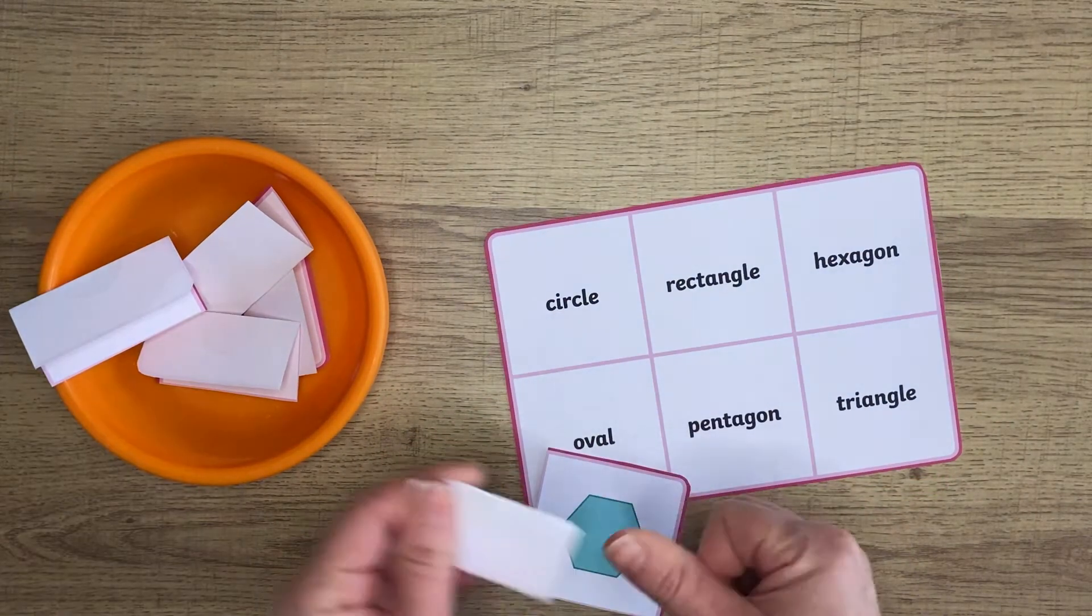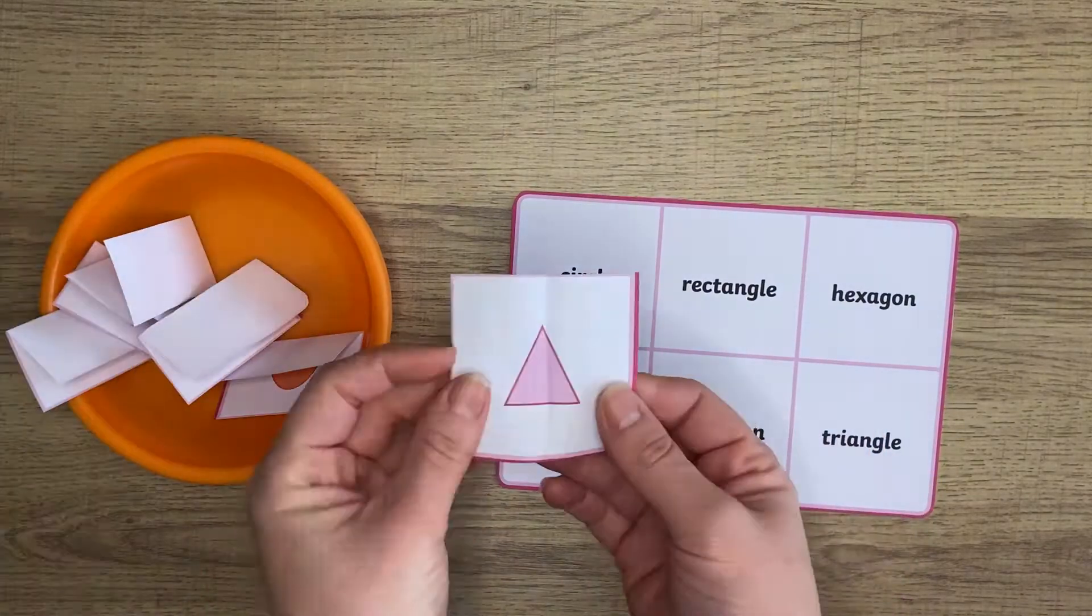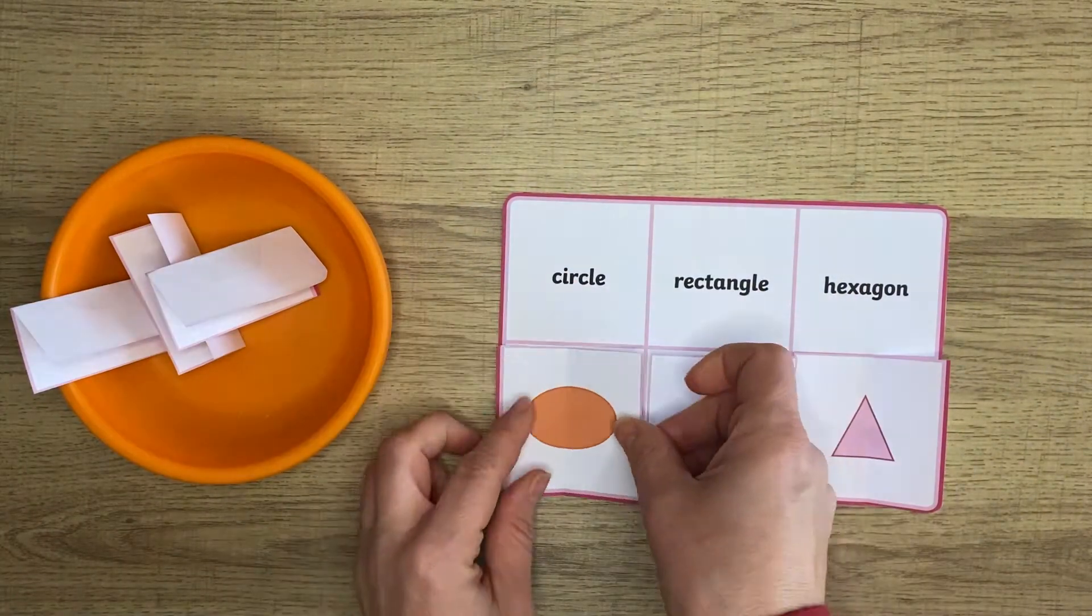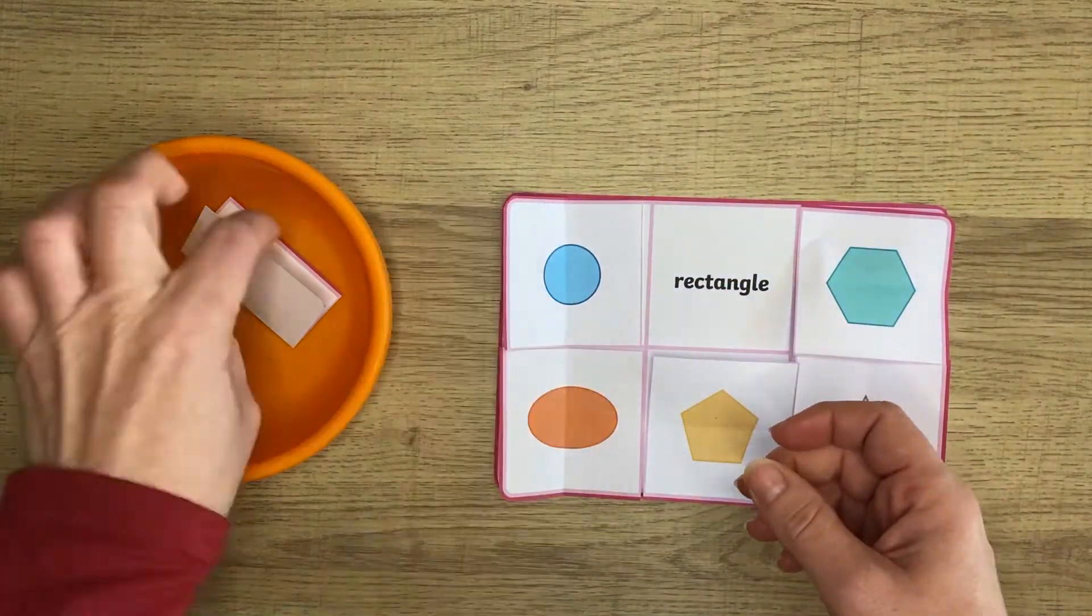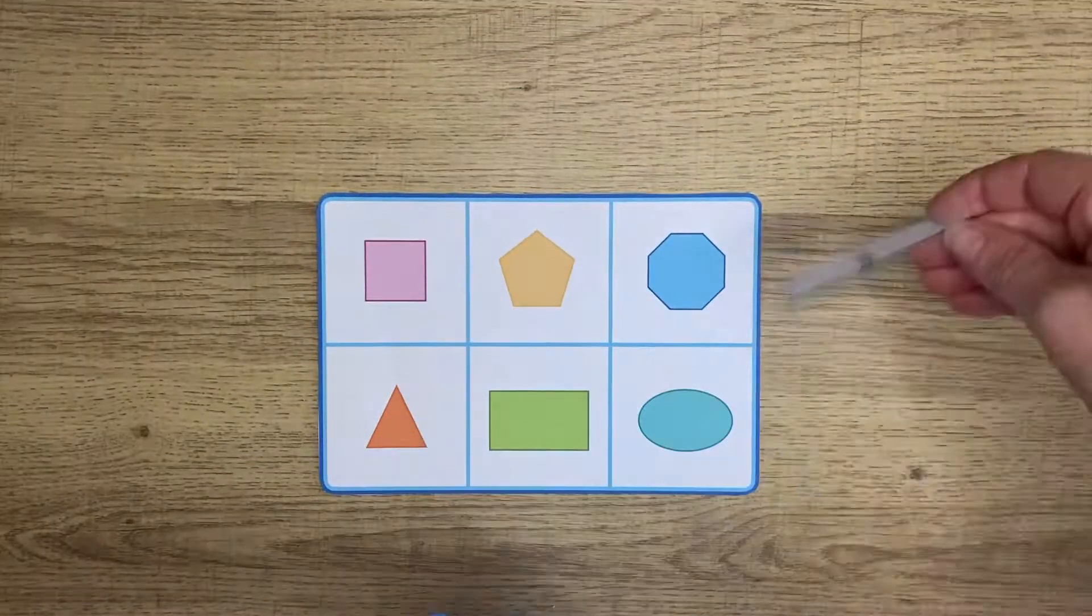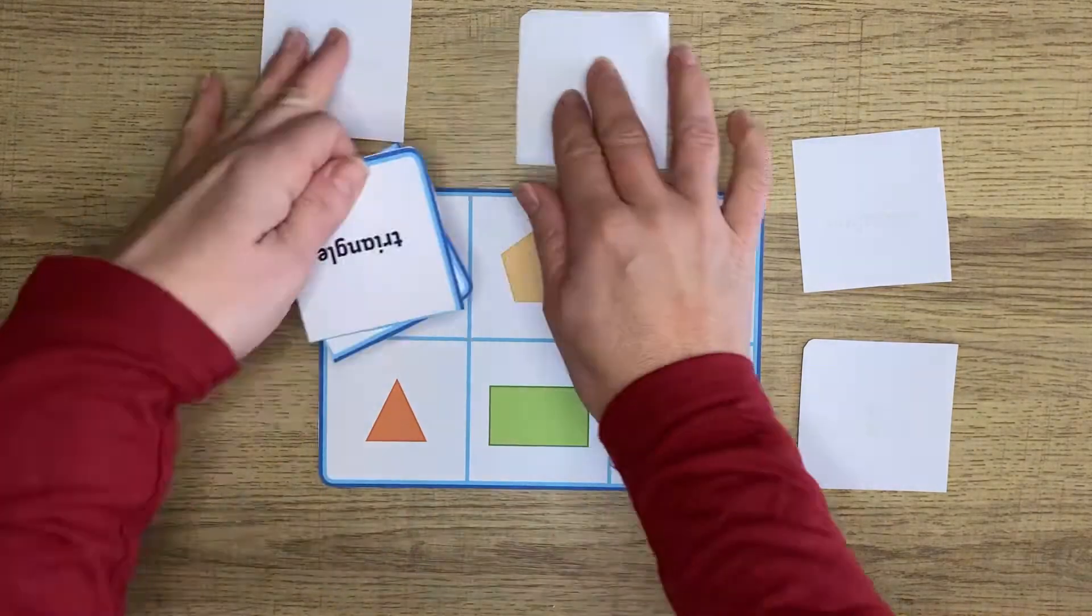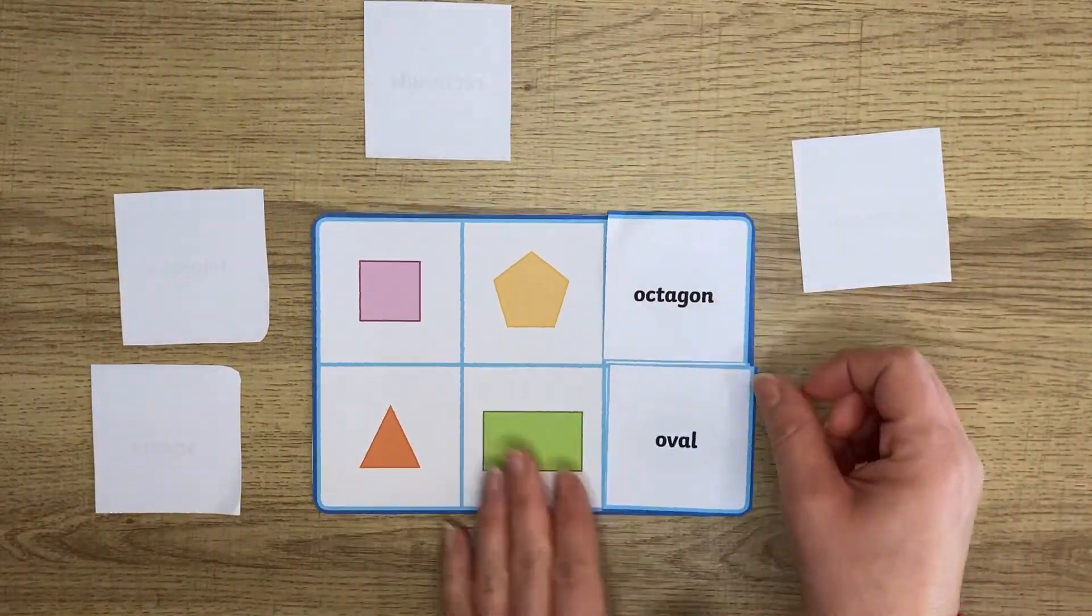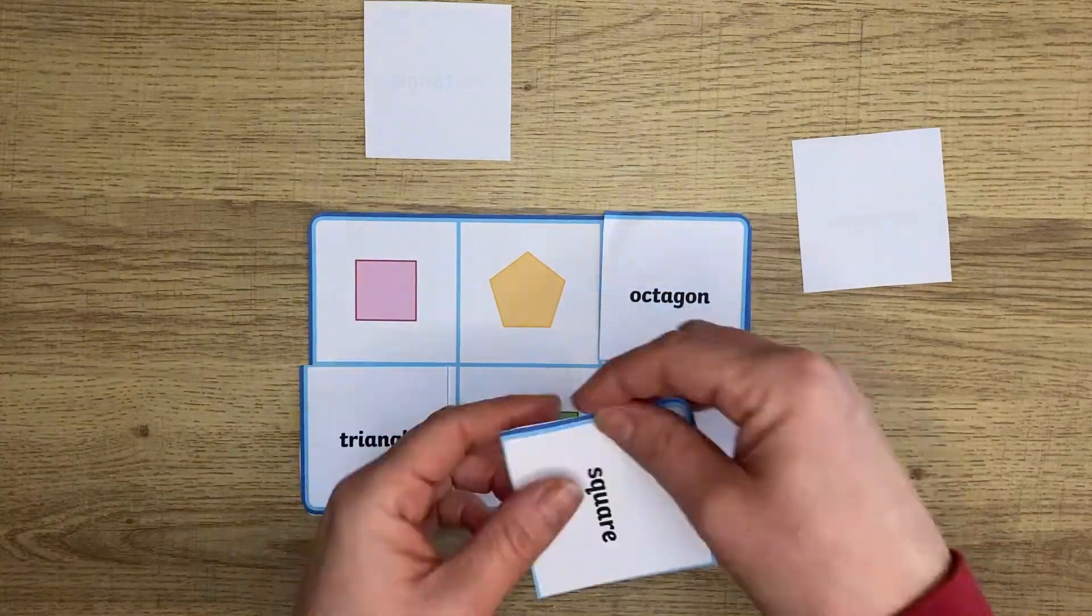Here is the name board and then the shapes are cut up. Why not fold them up, pop them in a pot and get your child to pick one out and match it to the correct name. Similarly you could print off the shape board and then cut up the name board and turn them over and then get your child to pick one and match it to the correct shape.